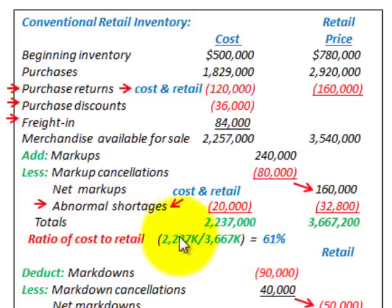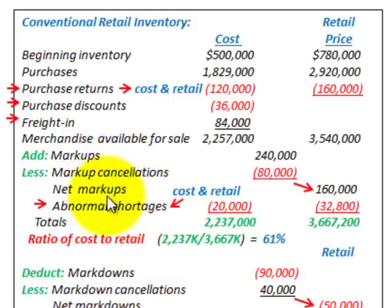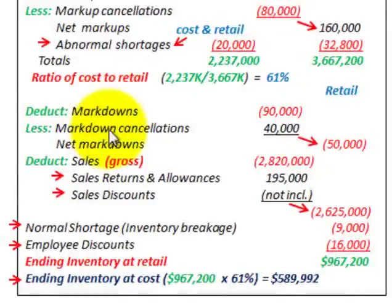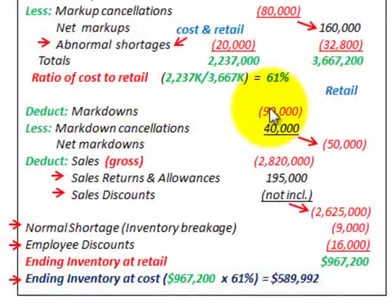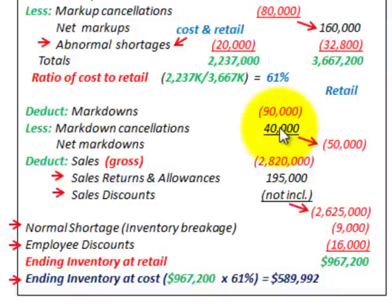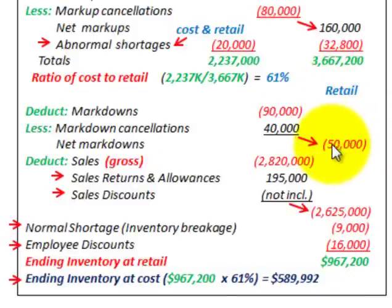Using the conventional method, we include markups but exclude markdowns when calculating the cost-to-retail ratio. Next, we apply markdowns. With markdowns of $90,000 and markdown cancellations of $40,000, we have net markdowns of $50,000, which are deducted from the retail price column only — not the cost.